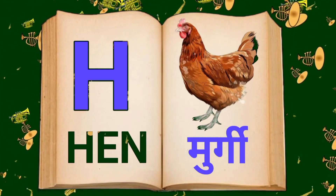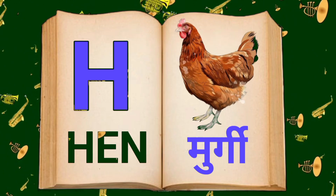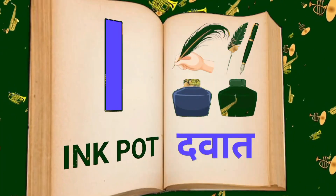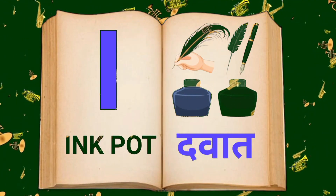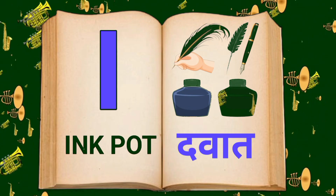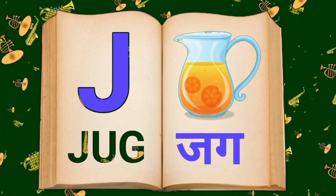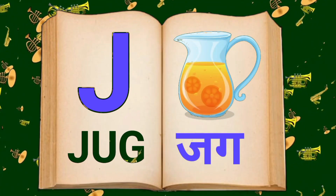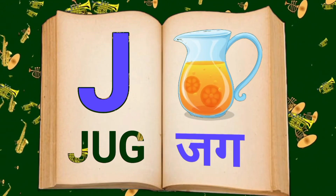H for Hen, Hen means murgi. I for Inkpot, Inkpot means dava. J for Jug, Jug means jug.